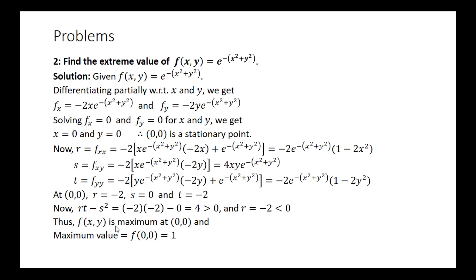Thus, the function has a maximum value at the stationary point (0, 0). We will find out the maximum value by substituting the stationary point in the given function. That is e to the power of minus (0 plus 0), which is e to the power 0, equal to 1.